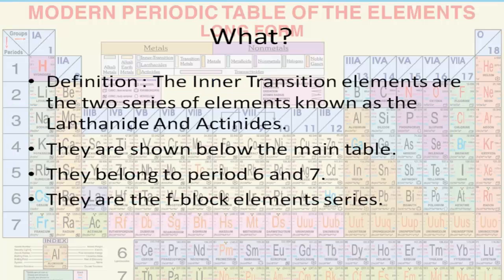The inner transition elements are the two series of elements known as lanthanoids and actinoids. They are shown below the main table and belong to periods 6 and 7 of the periodic table. They are also called the f-block element series.